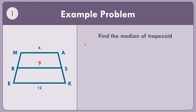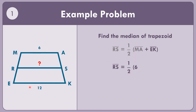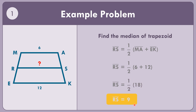In example number one, let us find the median of the trapezoid. Segment RS equals one-half multiplied by the quantity segment MA plus segment EK. Replacing the values: segment RS equals one-half times the quantity 6 plus 12. So 6 plus 12 equals 18, and one-half times 18 equals 18 times 1 divided by 2, which equals 9.